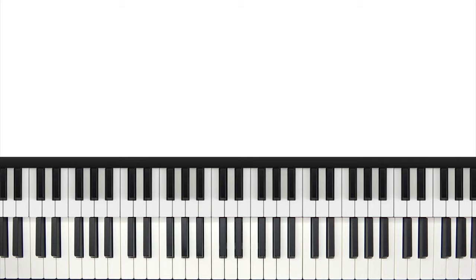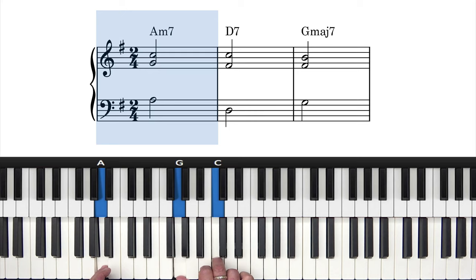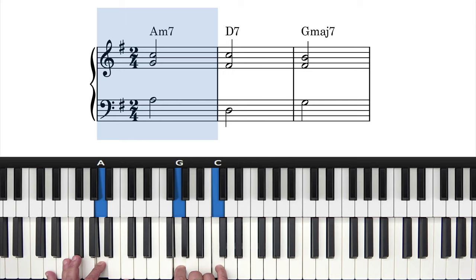Let's pick the key of G major. I'm going to do a two-five-one, which will be A minor, then D7, and then G major. I'm just doing thirds and sevenths.